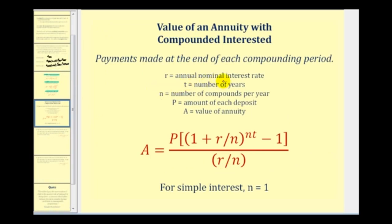So r would be the annual nominal interest rate, t would be the number of years, n is the number of compounds per year, P is the amount of each deposit, and A would be the value of the annuity. And if we were dealing with simple interest, n would be equal to one. Let's go and take a look at a couple of examples.